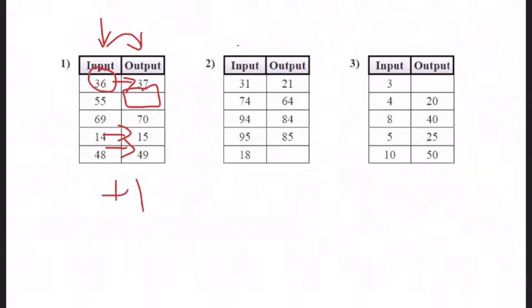Okay, so what you're trying to do here is figure out the rules. So this one, I got 31 to 21, 74 to 64, 94 to 84, 95 to 85. So I'm going down. If you're going down like that, you either are going to divide or subtract. It looks like I'm subtracting and I'm subtracting 10. So my answer for this box is 8. So we are subtracting 10.